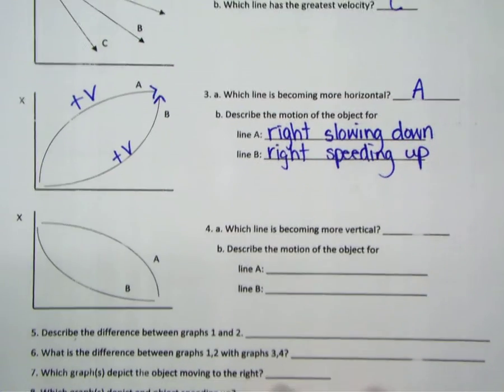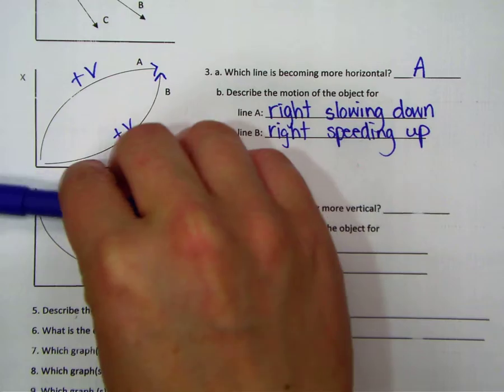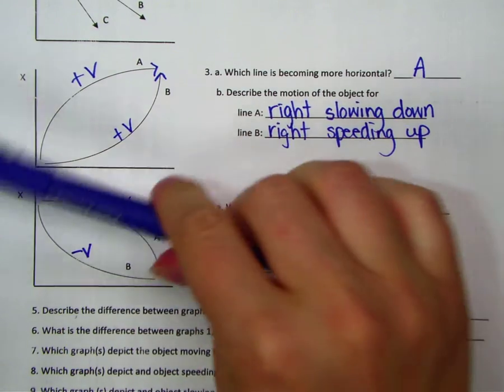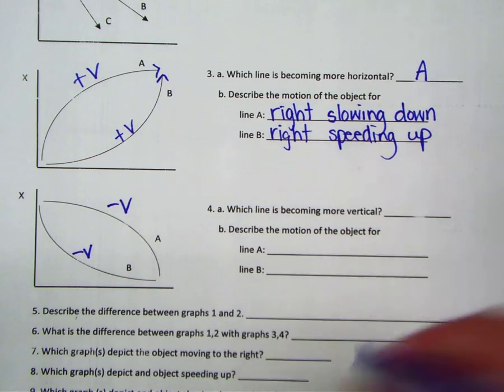Looking at graph number four, which one is becoming more vertical? So now we have a negative slope, negative velocity, meaning we're going to the left, and line A is now becoming more vertical.